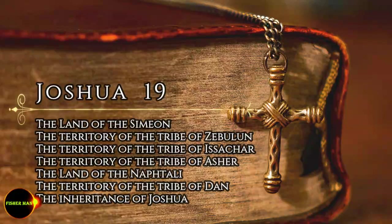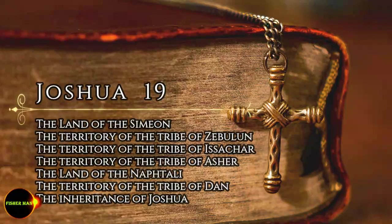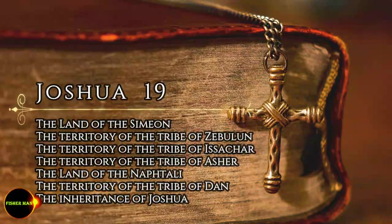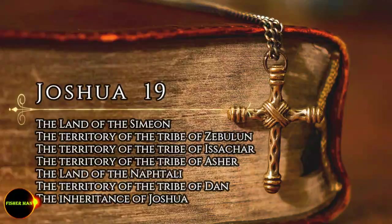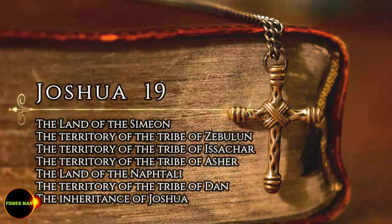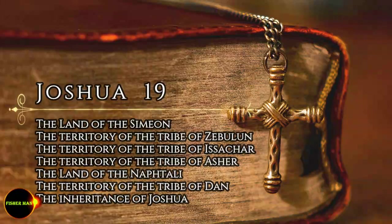The boundary then turned back toward Ramah, and went to the fortified city of Tyre, turned toward Hosea, and came out at the sea in the region of Axib, Amah, Aphek, and Rehob. There were twenty-two towns and their villages. These towns and their villages were the inheritance of the tribe of Asher, clan by clan.